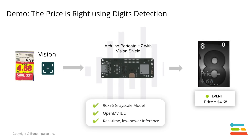In this demonstration we're going to show you how to build a price label detection system using digits recognition, and finally see it running locally on the Arduino Portenta H7 Plus Vision Shield.